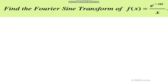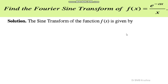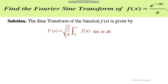In this video we are going to talk about the Fourier sine transform and how to find the Fourier sine transform of the function f(x), where f(x) = e^(-ax)/x, x is the variable and a is a constant. The formula for the Fourier sine transform is: F(s) = √(2/π) · ∫₀^∞ f(x) sin(sx) dx.